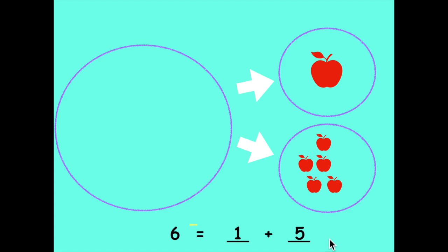You might notice our equation looks different than normal. The equal sign is at the beginning, not at the end. If you notice that, you're right. The equation can be written like this. Remember what equals means? Equals means the same. So everything on this side of the equal sign must be the same as this side. 6 is the same as 1 and 5. We still have 6 apples. They're just spread out differently.